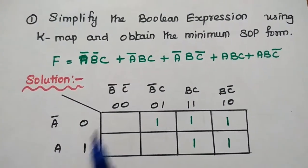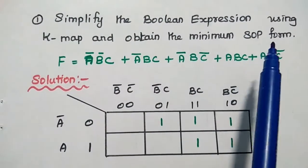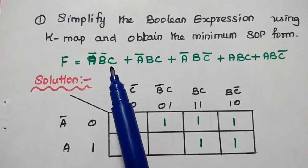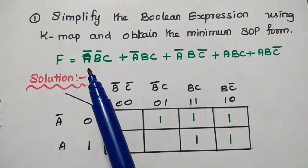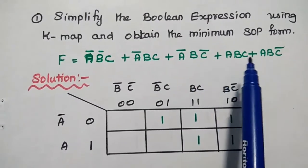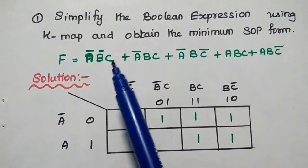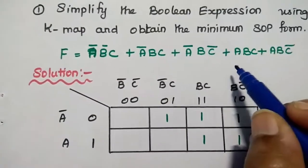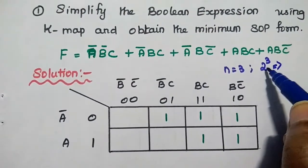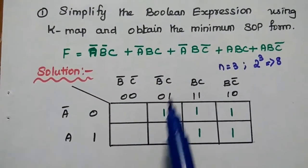The first problem is to simplify the Boolean expression using KMAP and obtain the minimum SOP form. The given SOP uses minterms. The function F equals A̅B̅C + A̅BC + A̅BC̄ + ABC̄. Here, 3 variables are used: A, B, C. So N equals 3, meaning we need 2³ = 8 cells. This is the KMAP for this expression.